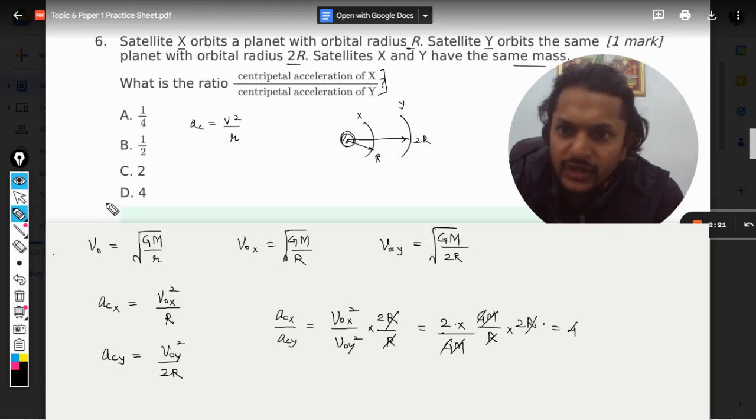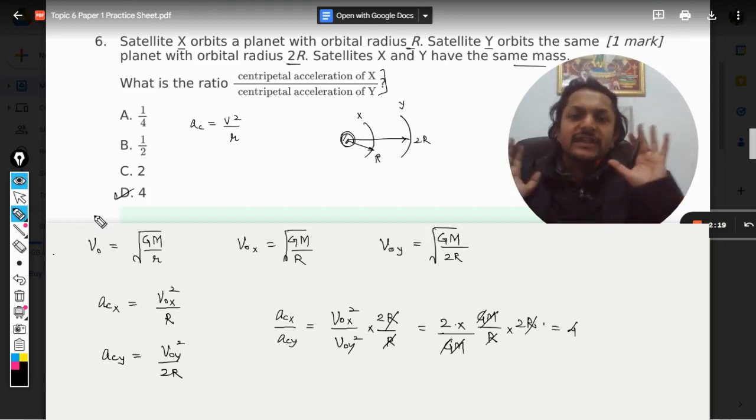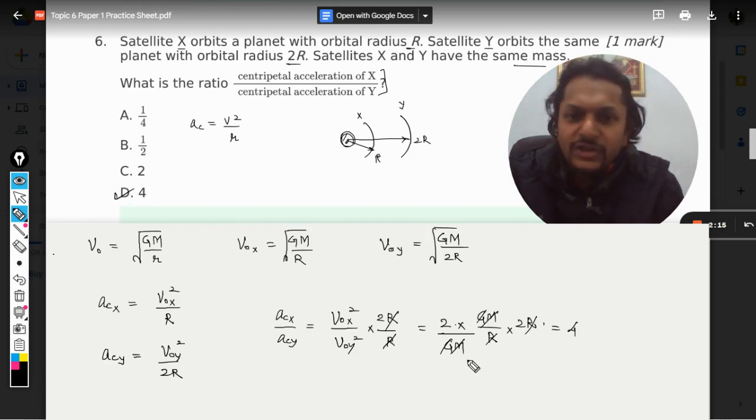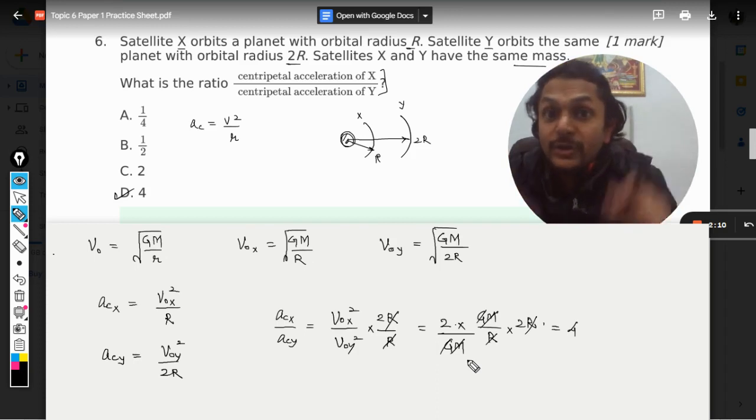So your answer will be 4, so answer is D. So this is how we do it, but the only thing is that this calculation makes it little tedious, so please pay a little more attention here and try to do it yourself and you would be getting this answer. All the best, bye.